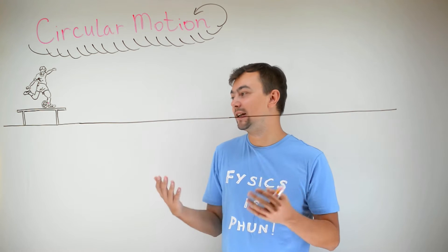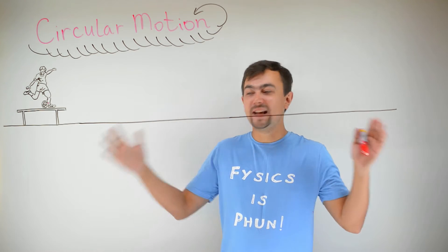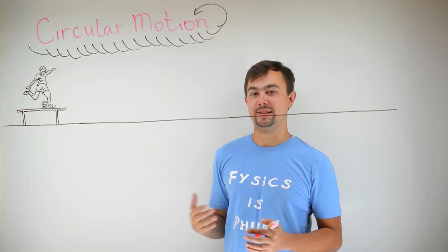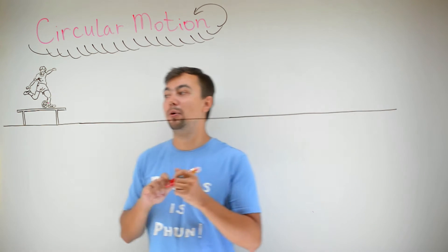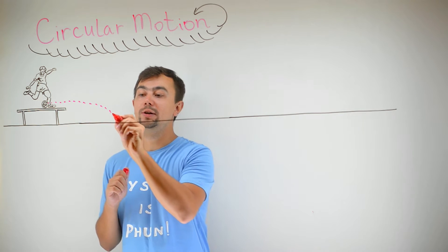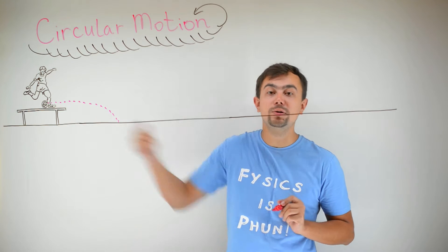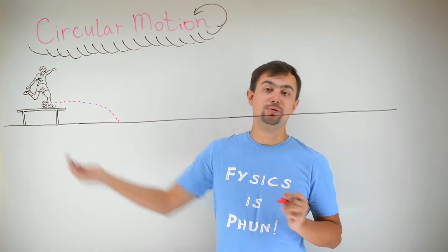How far can you kick a football? Let's imagine that we live in a flat world with no air resistance. If we kick the ball, it will probably go somewhere here. Due to gravity, it eventually falls onto the ground and stops due to friction.